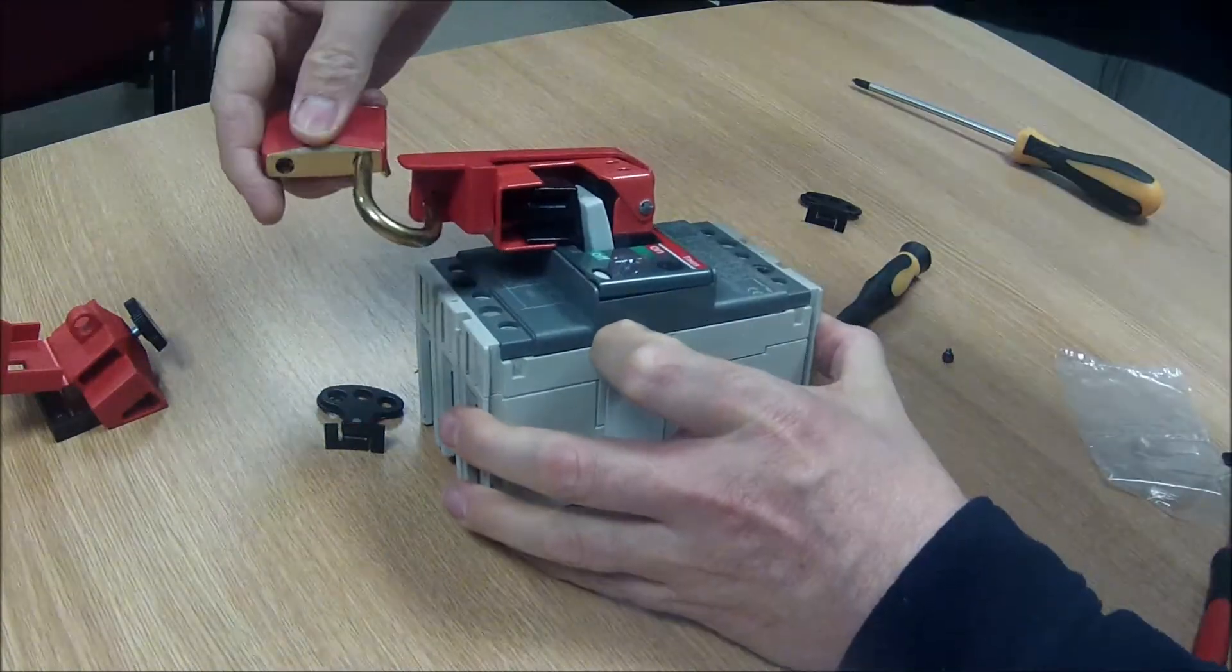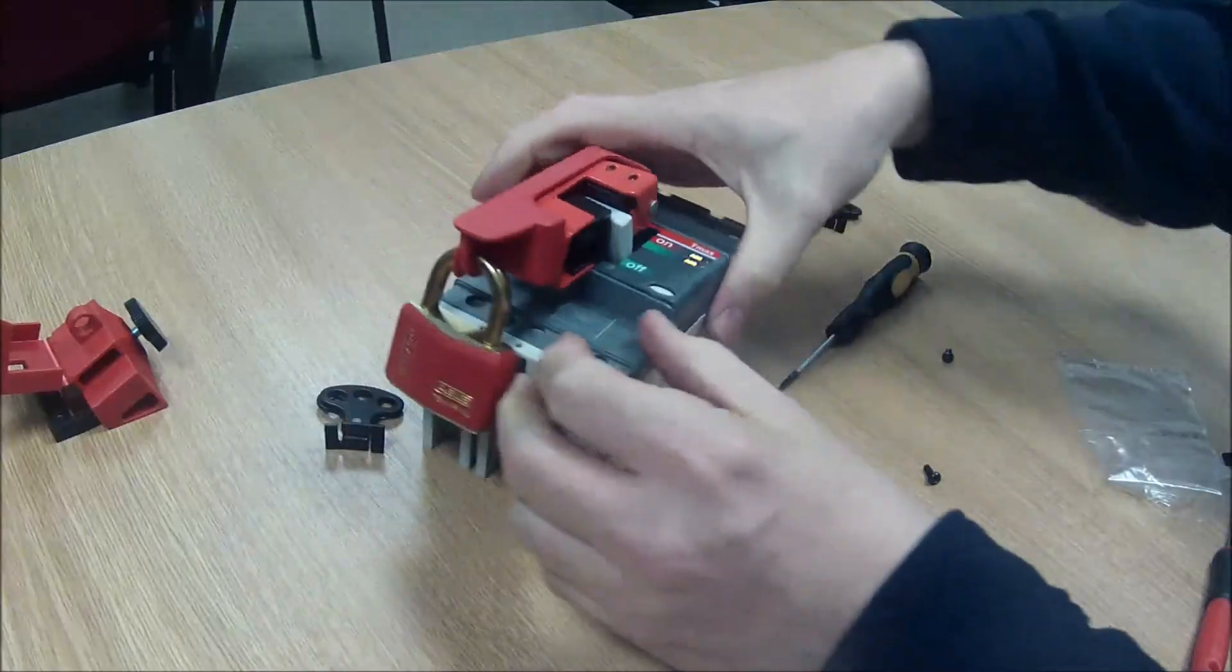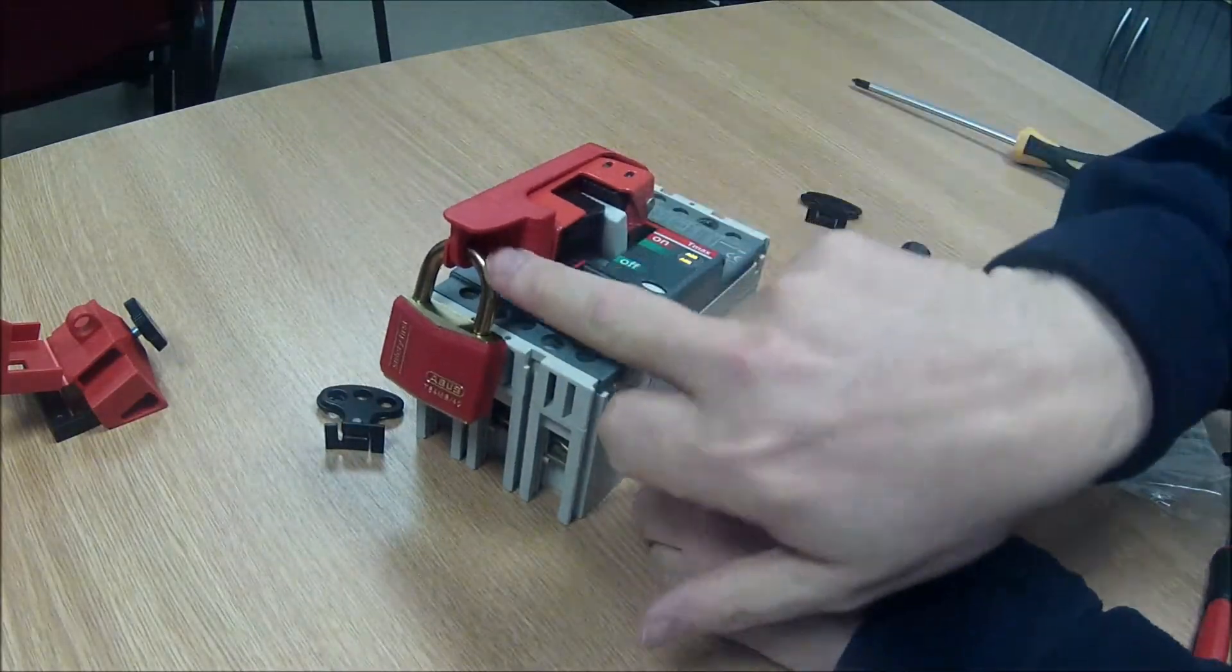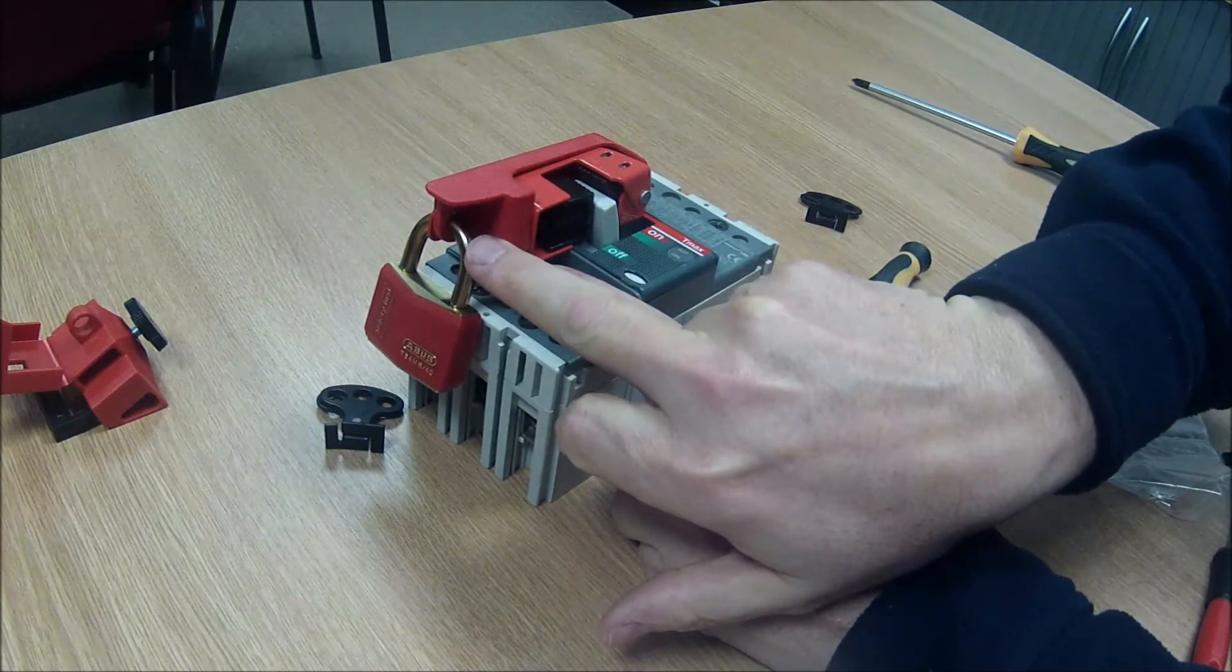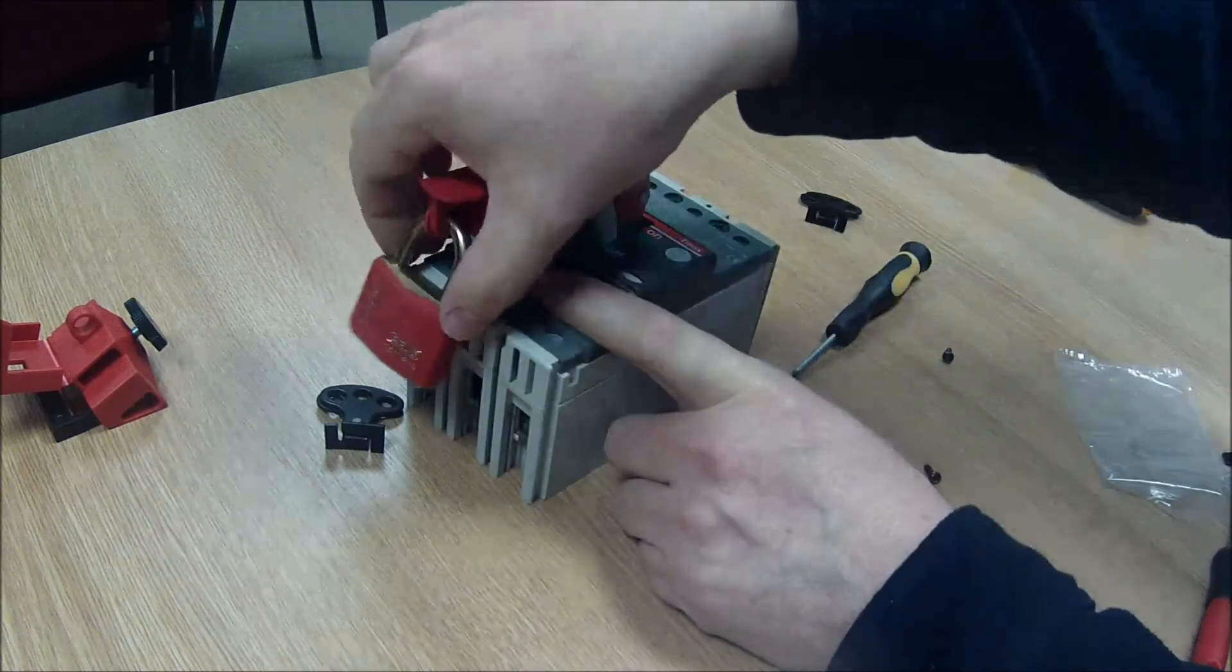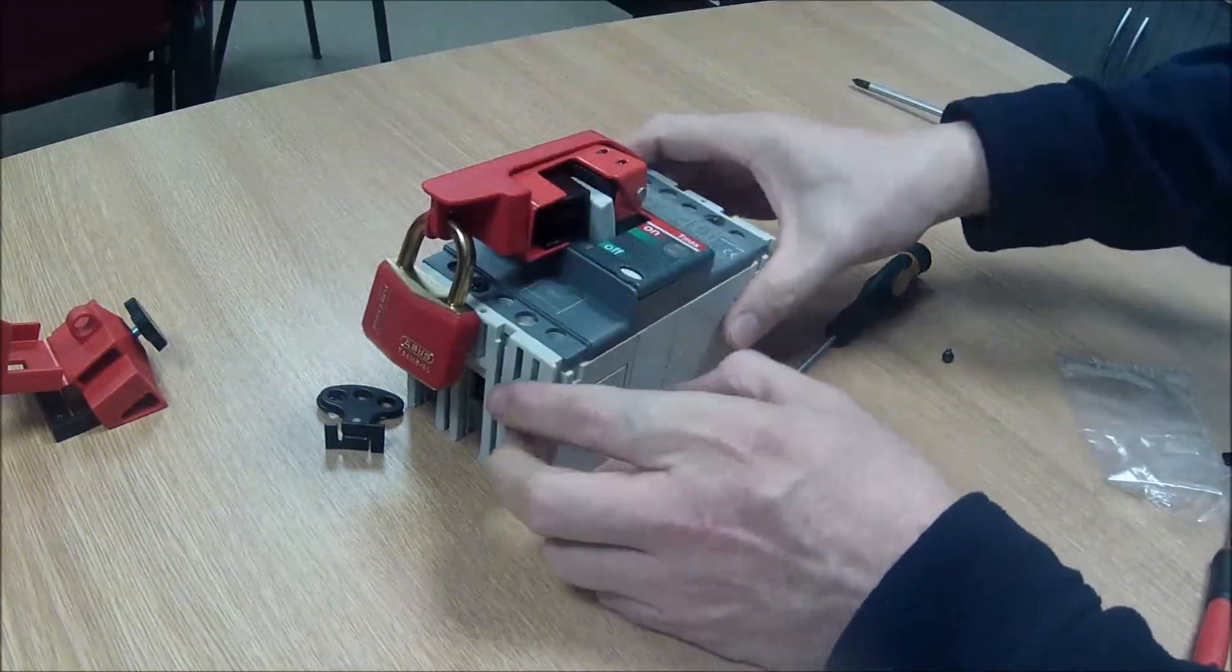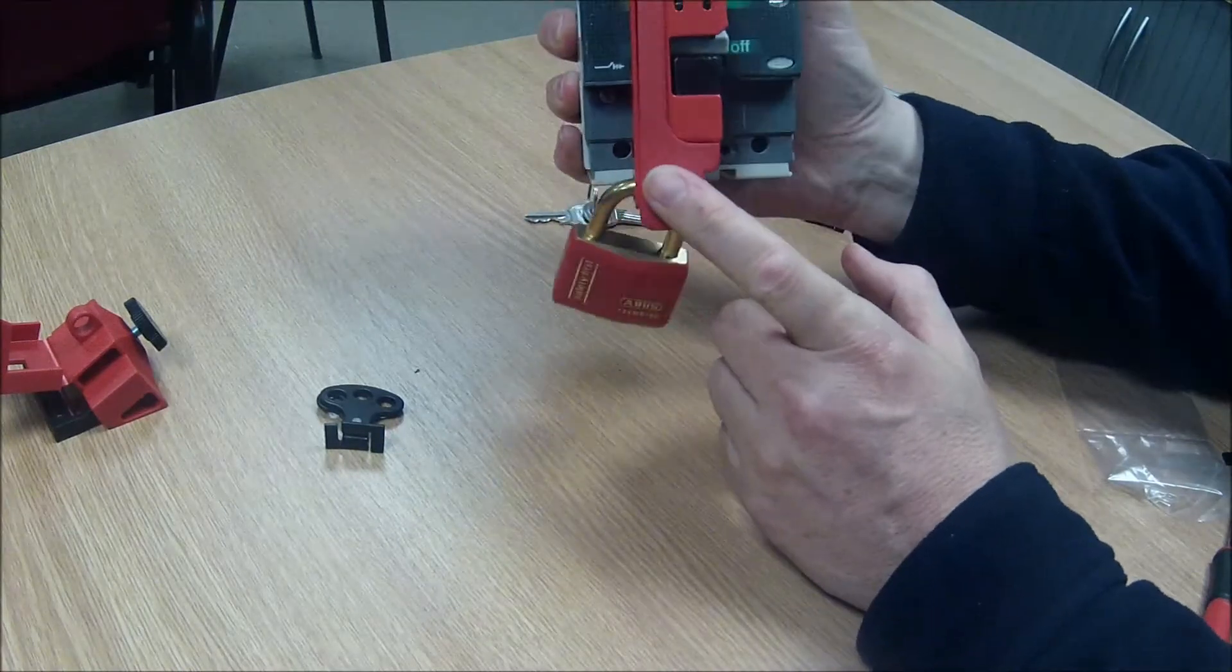We can pop the padlock through here. Snap that shut. Like the Brady unit there's only space for one padlock. But you can add a lockout hasp on here. To extend the number of padlocks you can fit on there and lock it. So that's the Master Lock 491B.